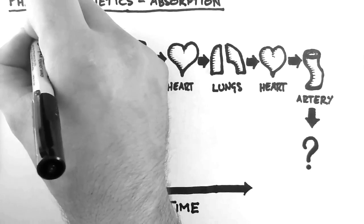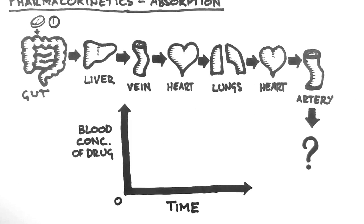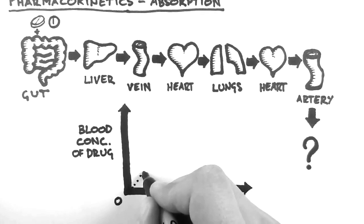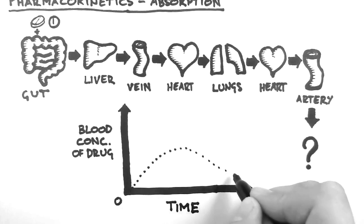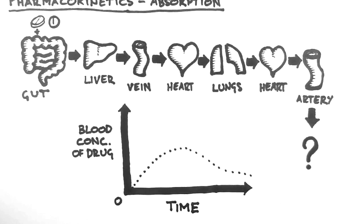These drugs move through the digestive system and get absorbed by the gut. Then they move through the liver, the venous circulation, the heart, the lungs, back to the heart, and then to the arterial circulation. This takes quite some time, so what we see is a slow rise in the blood concentration, and then a slow fall. Note that the Cmax is quite low, and the Tmax is quite large.